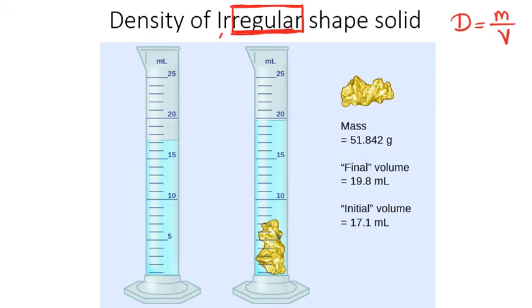But when we have an irregular shape solid like this example, you need to work with the displacement method. Displacement method is the method we use to measure the density of irregular shape solids. Specifically, we use it to measure the volume.